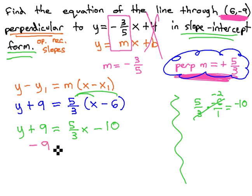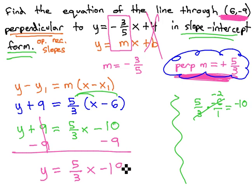Finally, we can isolate the y by subtracting 9 from both sides, and we have our equation: y = 5/3x - 19.